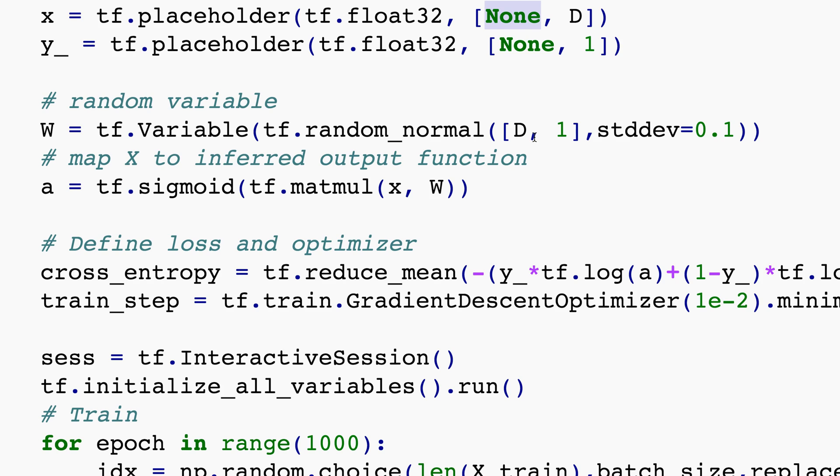And I'm going to be creating a D by 1 vector, and I'm going to initialize that as a random normal, as a normally distributed thing with a small standard deviation. This small standard deviation is actually going to be crucial. You don't want to make it too large because you'll have numerical problems.